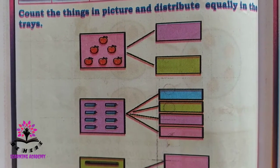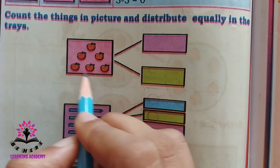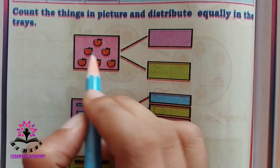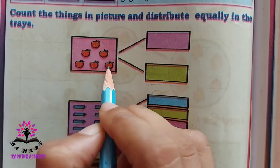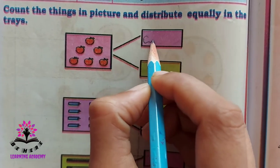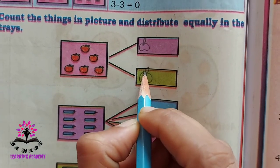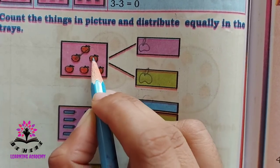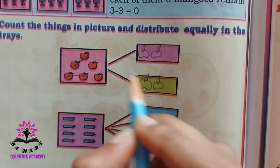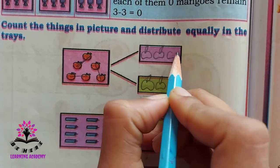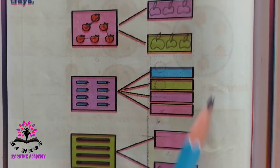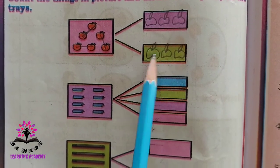Count the things in picture and distribute equally in the trays. You see here — apples. There are six apples. First let us put one apple in each tray, then two more apples, then the remaining two. Now in one tray there are three apples each.